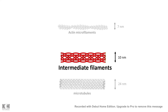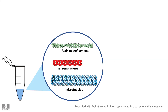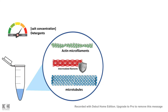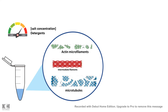Intermediate filaments are very much resistant to high salt concentration and detergents, and that is how we purify them. We apply high salt concentration and detergents which degrade actin microfilaments or microtubules but keep the intermediate filaments intact. So they are very stable in nature, yet as we'll understand by the end of this video, they are also very much dynamic.